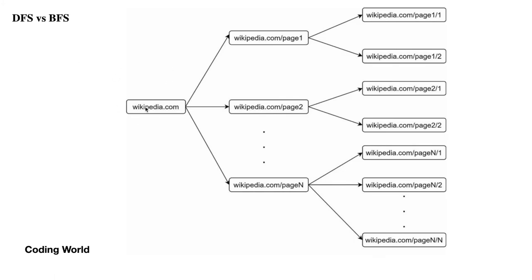In a depth-first traversal, from the first page we follow a link, then from that page follow the next link — this is a continuous process until we reach a page with no further links. You can also use breadth-first traversal. You can choose your traversal strategy according to your design requirements.